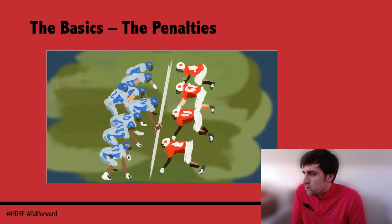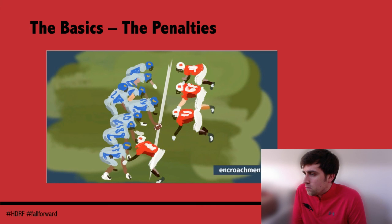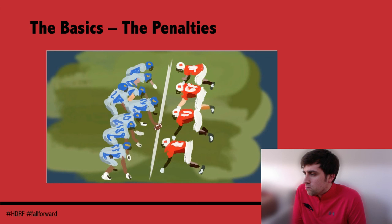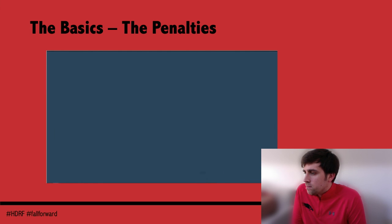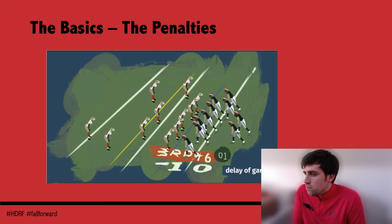The defensive equivalent to false start is encroachment — while defensive players can move, they cannot touch any offensive players; that's a five-yard penalty before the play even starts. A defensive player can step over the line of scrimmage and quickly jump back to his side — as long as no offensive players move, play continues. But a defensive player cannot jump at an offensive player to try to make him false start. Going offside can happen to either team — it means you're positioned on or past the line of scrimmage when the ball is snapped, also a five-yard penalty. Another pre-snap penalty is delay of game: if the offence does not snap the ball when the play clock reaches zero, that's a five-yard penalty for delay of game.